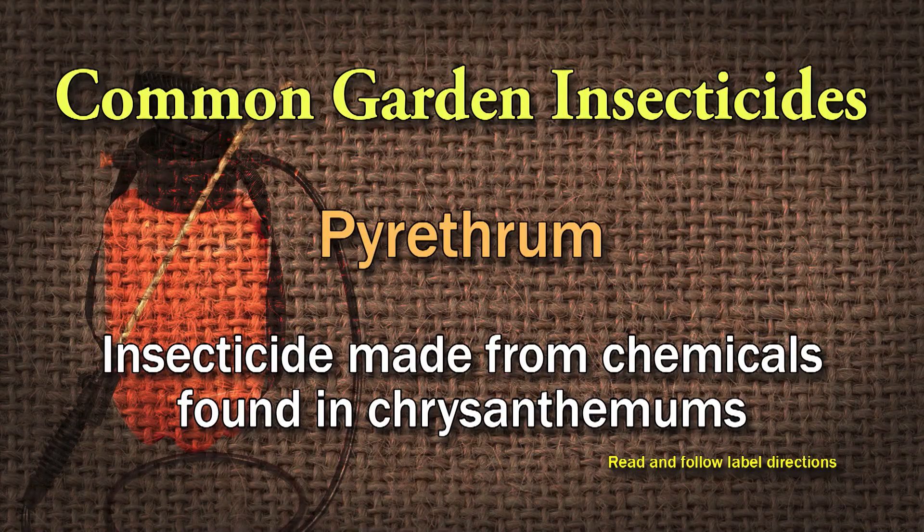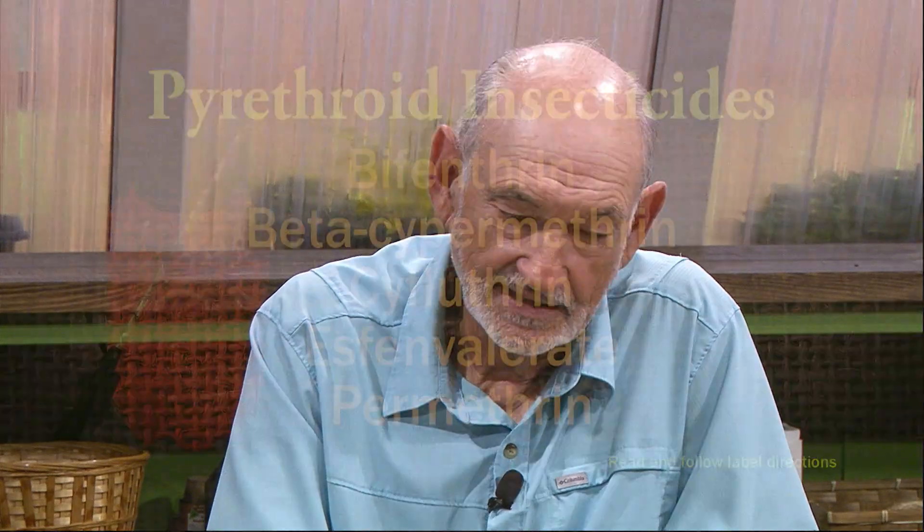Unfortunately, especially with carbaryl, some insects have developed a resistance to those older products. A hotter product is pyrethrum, a naturally occurring insecticide made from chrysanthemums. It is extremely effective and will take care of all the insects carbaryl handles. Starting in the late 70s and 80s, synthetic pyrethroids were developed — a synthetic form of pyrethrum. These include bifenthrin, beta-cypermethrin, cyfluthrin, esfenvalerate, and permethrin — all synthetic pyrethroids.